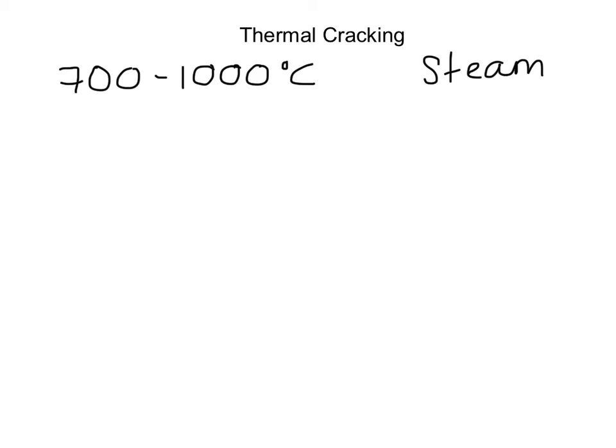We're going to start with another long chain as an example: C11H24. And this is called undecane. The addition of these really high temperatures is going to decompose our undecane and create different fractions.